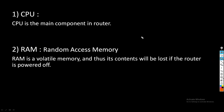The very first and most important component of router is CPU. Just like in computers, CPU is the main component — in router as well. Our next component of router is RAM, that is Random Access Memory. Our data is temporarily saved in RAM.